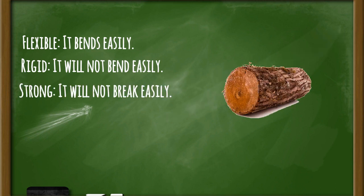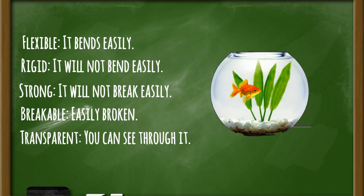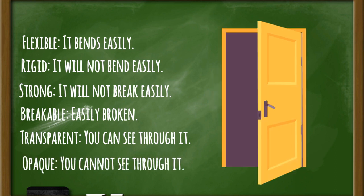The next property of matter is strong, which means it will not break easily — like a piece of wood that needs special equipment to break down. The opposite of strong is breakable, meaning something is easily broken, like a piece of glassware. Next is transparent, which means you can see through the item — like a fishbowl or a clear glass. The opposite of transparent is opaque, meaning you cannot see through the item, like a solid wood door or a banana.